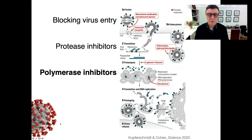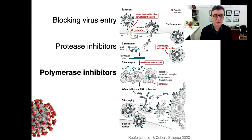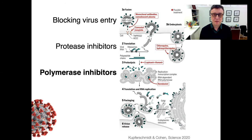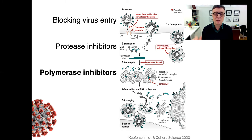People who develop drugs against COVID-19 use three main strategies. You can either block the entry of the virus to the cells, or you can try and inhibit an enzyme called the protease which is needed for the virus to make its proteins, or you can try to inhibit the RNA-dependent RNA polymerase enzyme which the virus uses to replicate its genome.